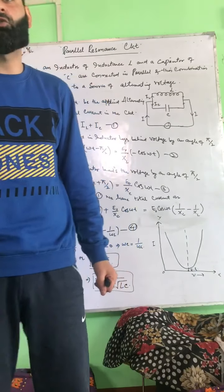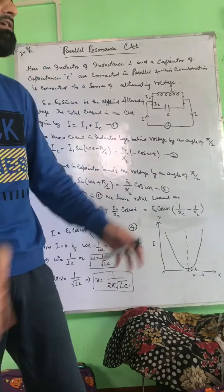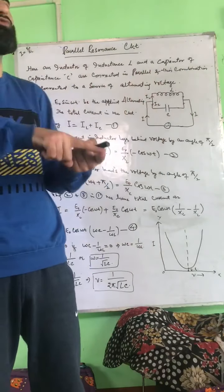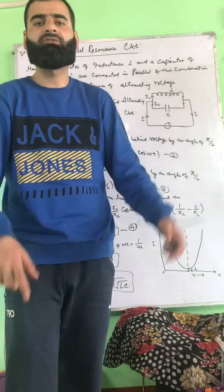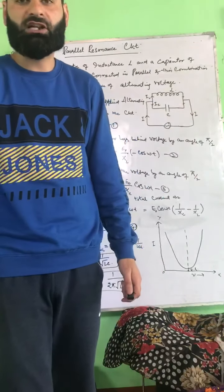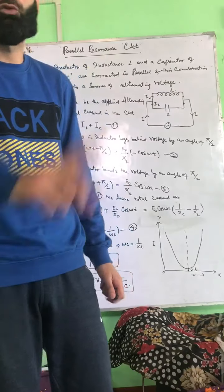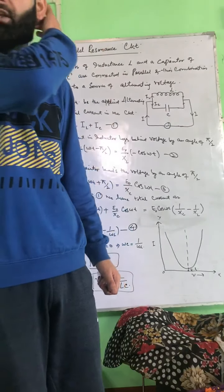At resonance, the current becomes zero and impedance is maximum, so that particular frequency is rejected. Other frequencies are transmitted, but that frequency is blocked.